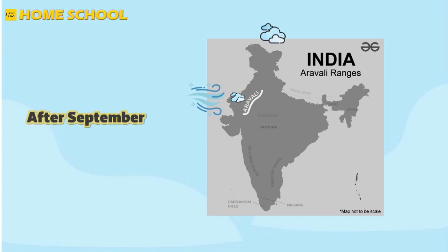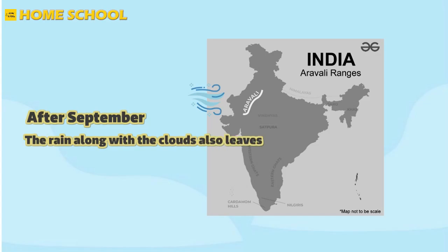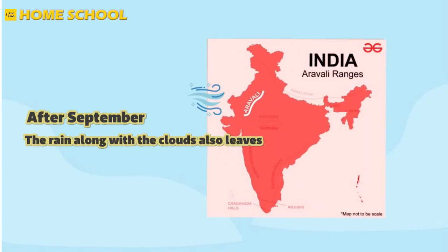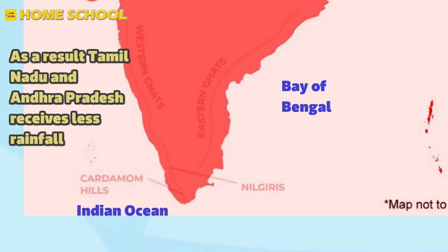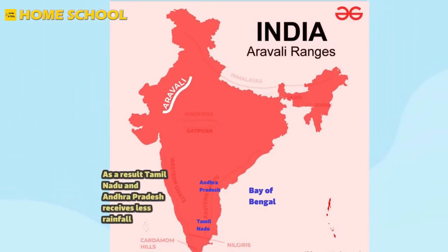After September, the clouds change their direction and start leaving the country, and the rain leaves along with the clouds. As there is no rain anymore, the temperature in India also starts increasing. These trade winds move back from the mainland along the Eastern Ghats towards the Indian Ocean, and as this happens, some water gets picked up from the Bay of Bengal. As a result, Tamil Nadu and Andhra Pradesh receive a little bit of rainfall. The winds that travel towards the country from the southwest direction are called the southwest monsoon, while the winds that go back are called the retreating monsoon.